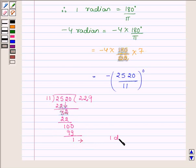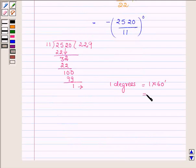Now this is 1 degree and 1 degree is equal to 1 into 60 minutes, which is equal to 60 minutes. And now let us divide 60 minutes by 11. 11 into 5 is 55, 5 remainder.